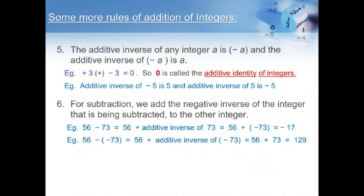The second example: 56 minus of minus 73 is equal to 56 plus the additive inverse of minus 73. Since the additive inverse of minus 73 is 73, we are adding these two integers and we get 129. The third example is minus 79 minus of 45. Here, minus 79 is a negative integer and 45 is a positive integer. So we take the additive inverse of 45, which is minus 45. When we add two negative integers, we get a negative integer, so we get minus 124.